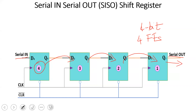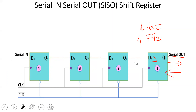This is a right-shift register. In a left-shift register, the input goes into flip-flop number one and the output comes from flip-flop number four. That is the difference. This video covers the right-shift register so that you can understand the shift-left register as well.